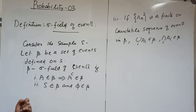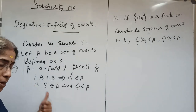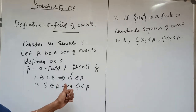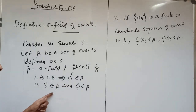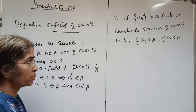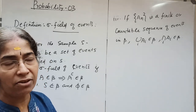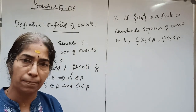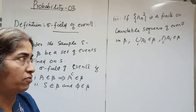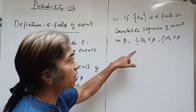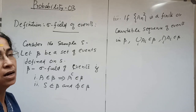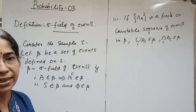So those three conditions must be satisfied: for any event A in beta, A-complement belongs to beta; S belongs to beta and phi belongs to beta; and if A_n is a finite or countable sequence of events in beta, then the union over i of E_i and the intersection over i of E_i both belong to beta.